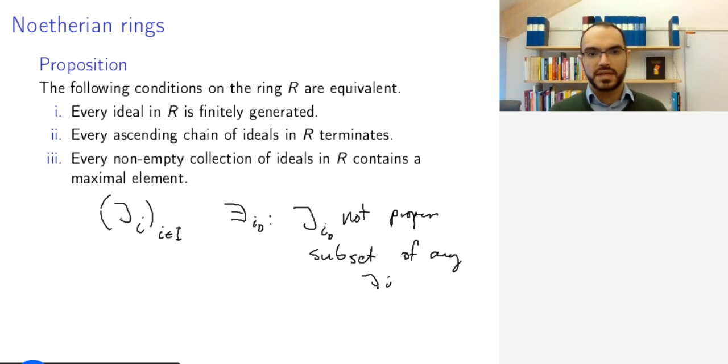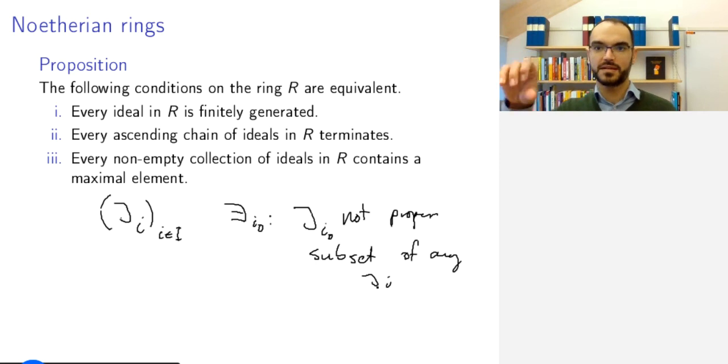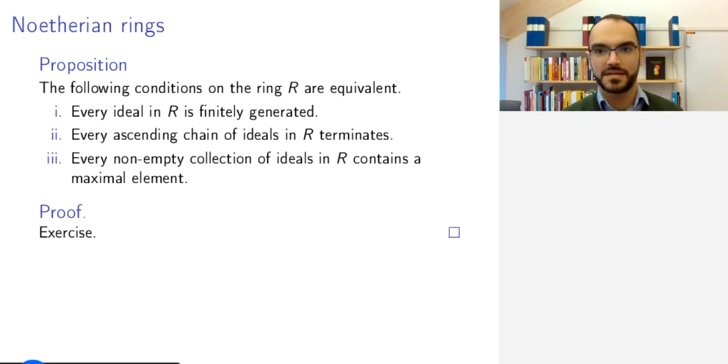And you can see the relation between the third and the second condition informally, because if you would have an ascending chain of ideals that doesn't terminate, then such a chain would not contain a maximal element, because if it doesn't terminate, this means that the ideals keep growing, so any ideal is a proper sub-ideal of some bigger ideal. That's a bit of the relationship. And in general, all these three properties are equivalent, and this makes an excellent exercise.